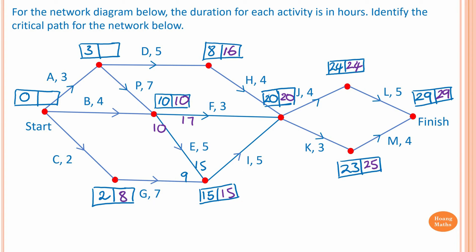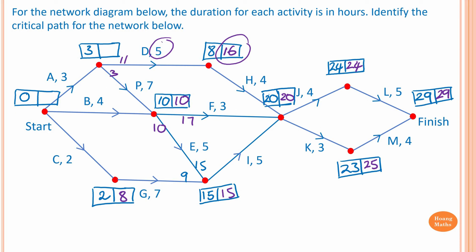To work out the latest starting time for activity D or P: sixteen minus five is eleven, and ten minus seven is three. So the latest starting time for P and D is three. Then ten minus four gives six, and eight minus two gives six. Finally three minus three is zero, so the smallest value is zero.